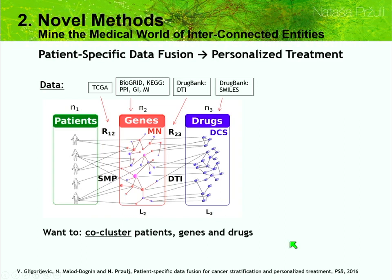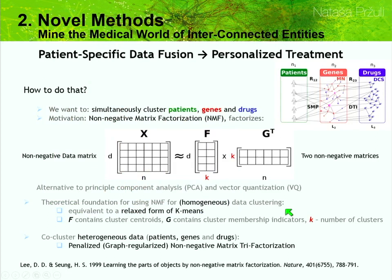We want to co-cluster patients, genes, and drugs simultaneously. Even clustering alone is NP-hard — this is why there are many different clustering methods such as hierarchical clustering and k-means. Now for heterogeneous data it's even harder. We were inspired by non-negative matrix factorization (NMF), shown in Nature in 1999, where you approximate a data matrix with two factors F and G — F contains cluster centroids and G is a cluster membership indicator, with k being the number of clusters. This is a relaxed form of k-means. But we have heterogeneous data, so we need tri-factorization.